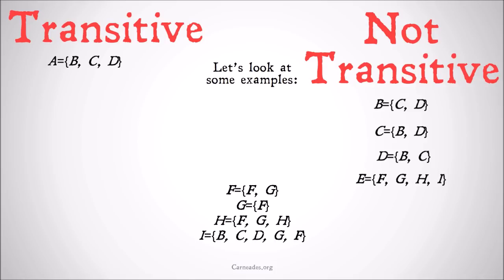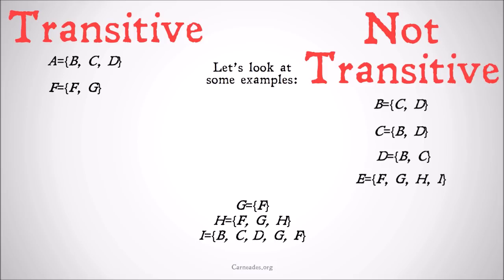What about F? F has as its members F itself and G. All sets are subsets of themselves, so F is a subset of F — that one passes muster. What about G? G has as its only member F. Is F a subset of G? Well, no, because F includes G but G doesn't include itself. So G is not transitive.